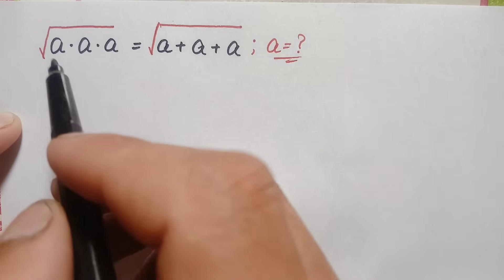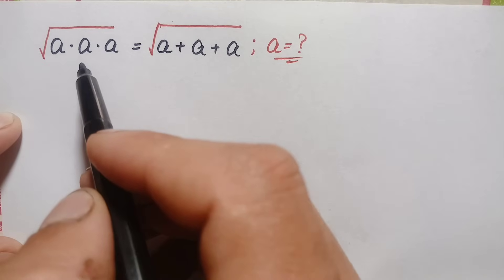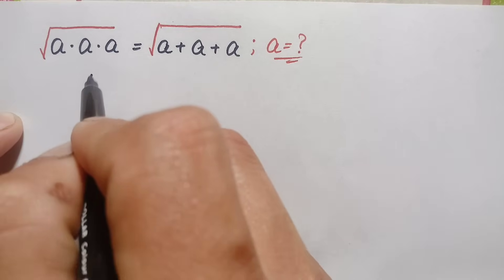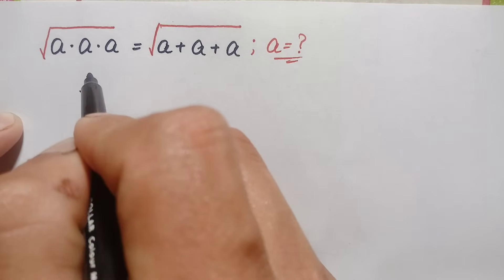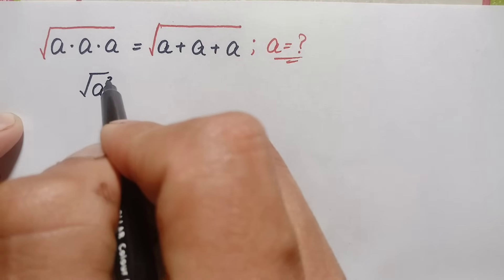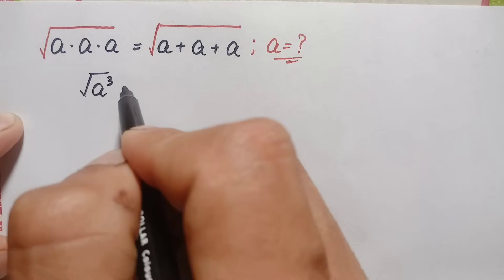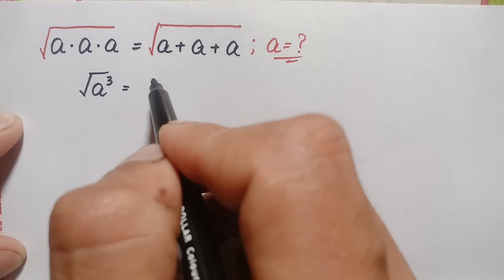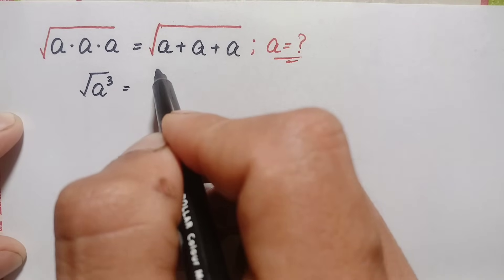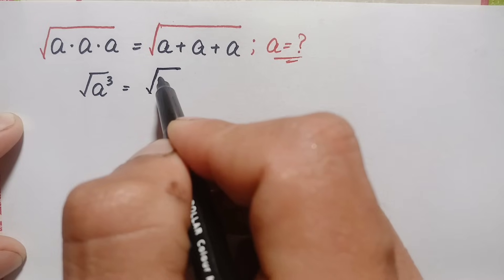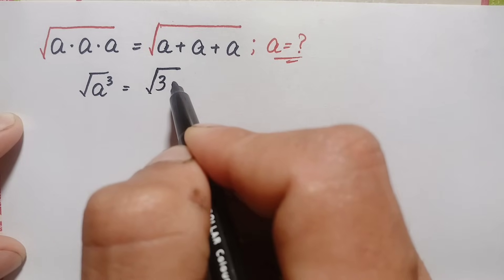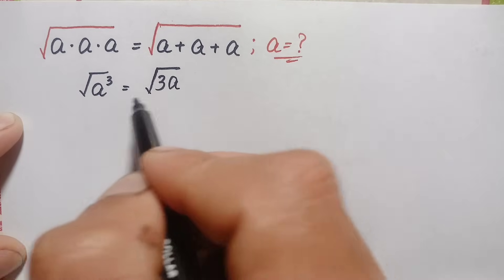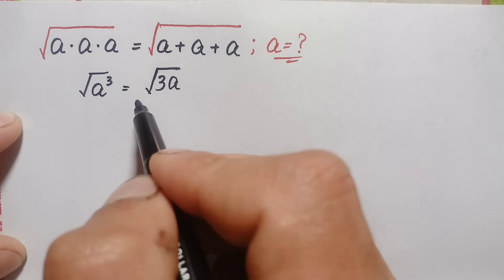Looking at the left hand side, a is multiplied three times, therefore we can write this as square root of a cube. On the right hand side, a is added three times, so we can write this as 3a. This becomes square root of 3a.